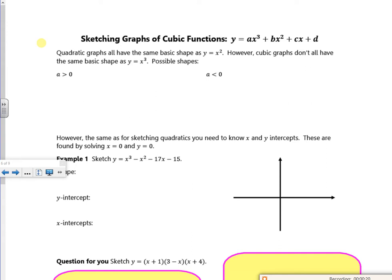So y = x³ looks like that - it goes flat and then goes up. But other cubic graphs could look different as well. If a < 0, like minus x³, it might go like that, or it could look like that. So basic shapes are slightly different and you've got to be careful.